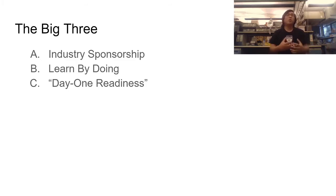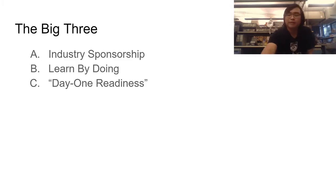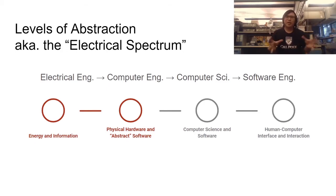We require less training than the average EE college graduate. These principles are active in all of the majors here in the college of engineering. So, levels of abstraction — what we call the electrical spectrum.